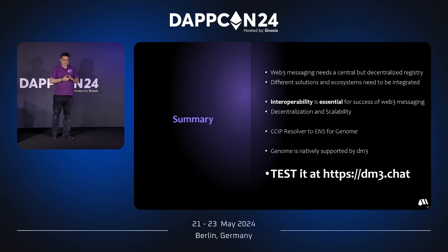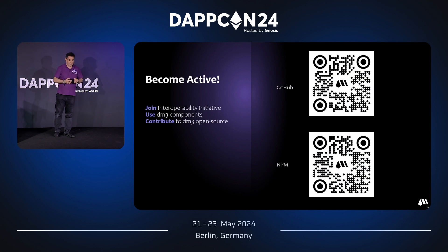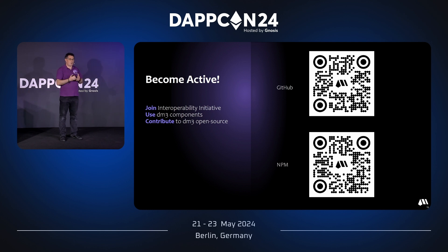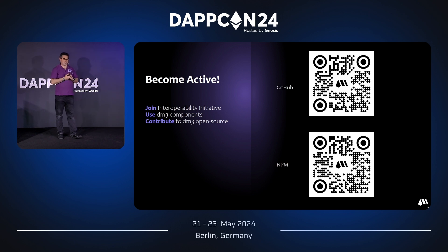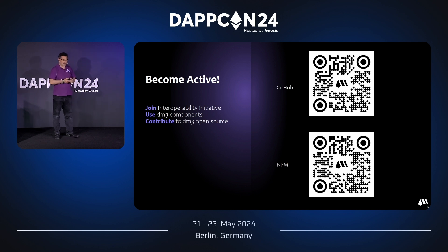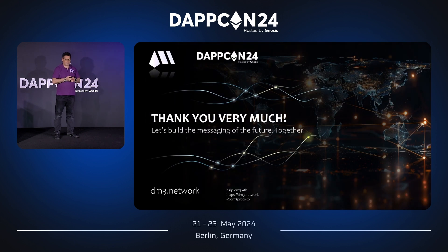The solution is live. You can go to DM3.chat and test it. If you have a Genome name, you can directly publish your profile there and be available on that name. The DM3 group is open — you can join this initiative to build an interoperable messaging ecosystem. Our components are available to integrate into your applications, you can build on top of the protocol, and you can use the ecosystems we have connected. Thank you very much.